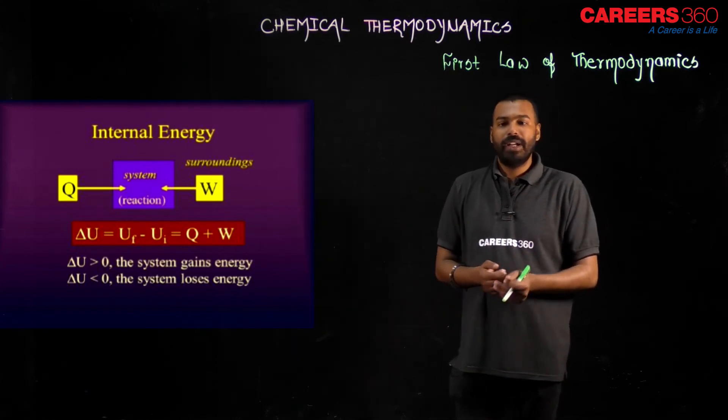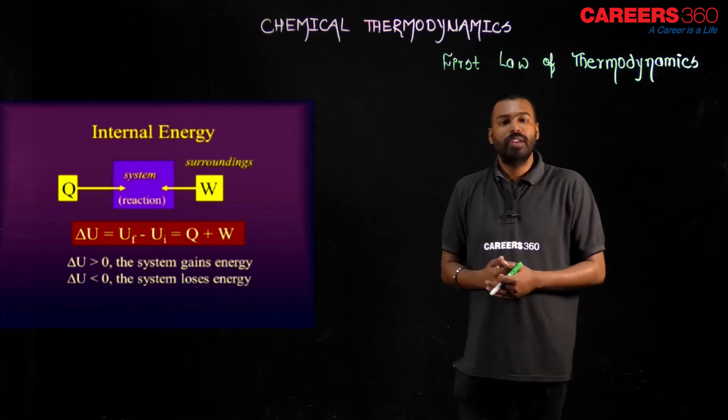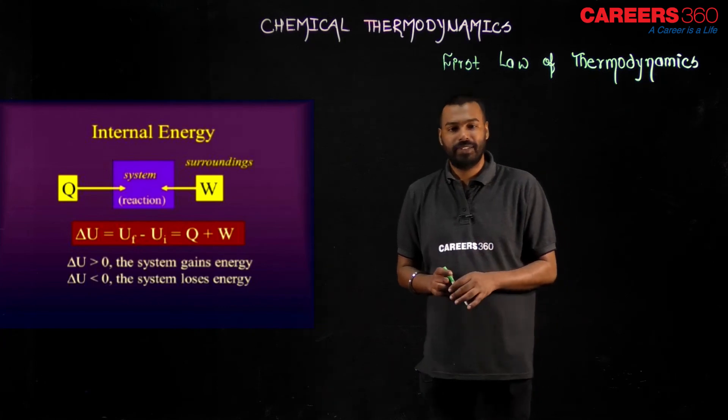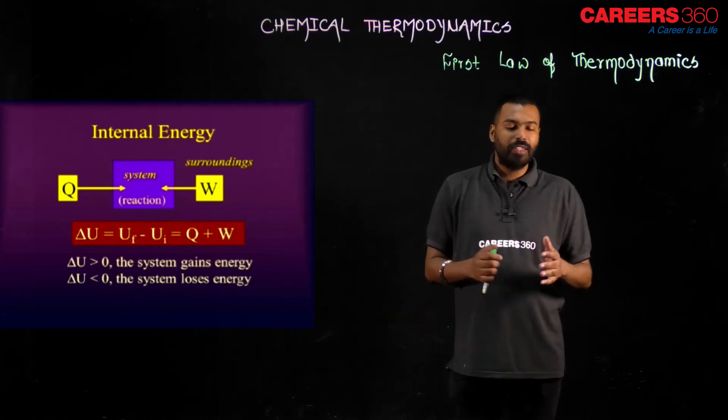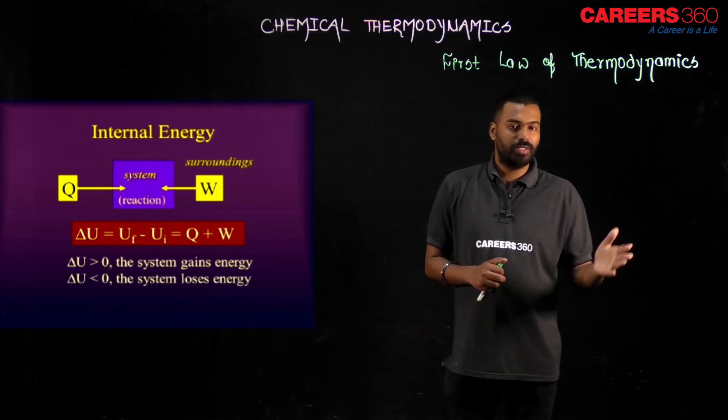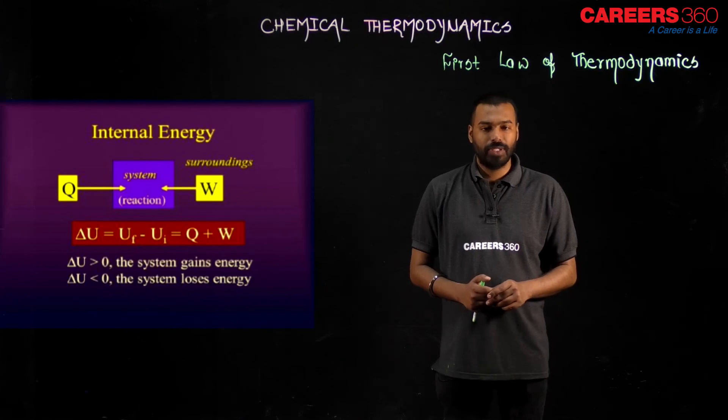lose energy. And W means surroundings - surroundings work done. This is what the first law of thermodynamics mainly states: that energy can neither be created nor be destroyed. It can transfer from one form to another form. I hope you understood this lecture. Thank you for watching.